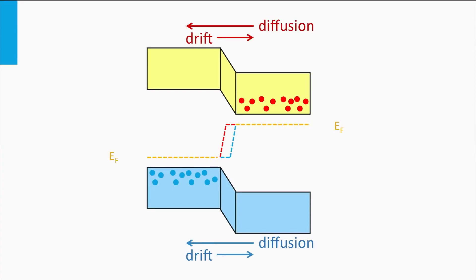The p-n junction is not in equilibrium anymore, and the Fermi level results in a splitting into quasi-Fermi levels in the depletion zone. The upper level represents the population of electrons, and the lower level represents the population of holes. In equilibrium, these distributions are mirrored and related by the Fermi-Dirac function. However, by applying a forward bias over the p-n junction, the system is not in equilibrium anymore and the population of holes and electrons becomes more complex.